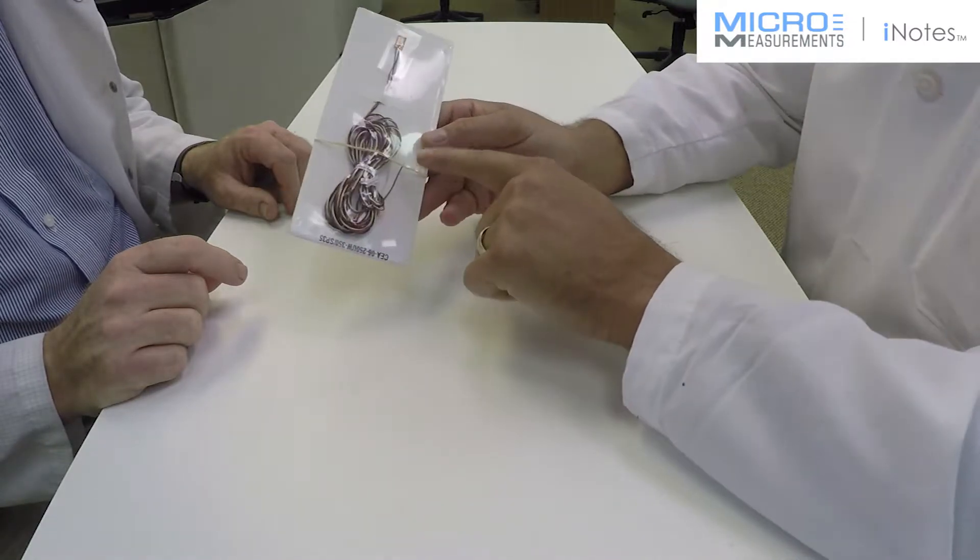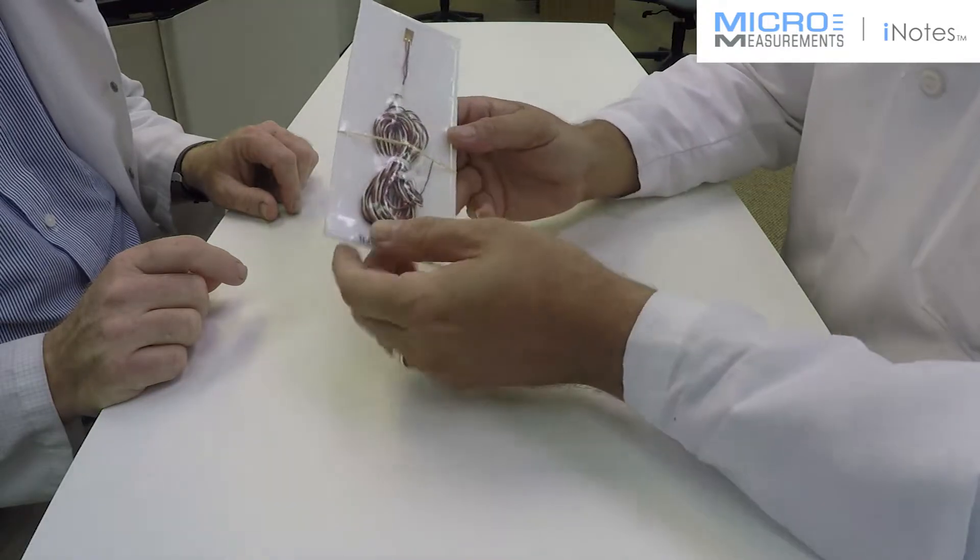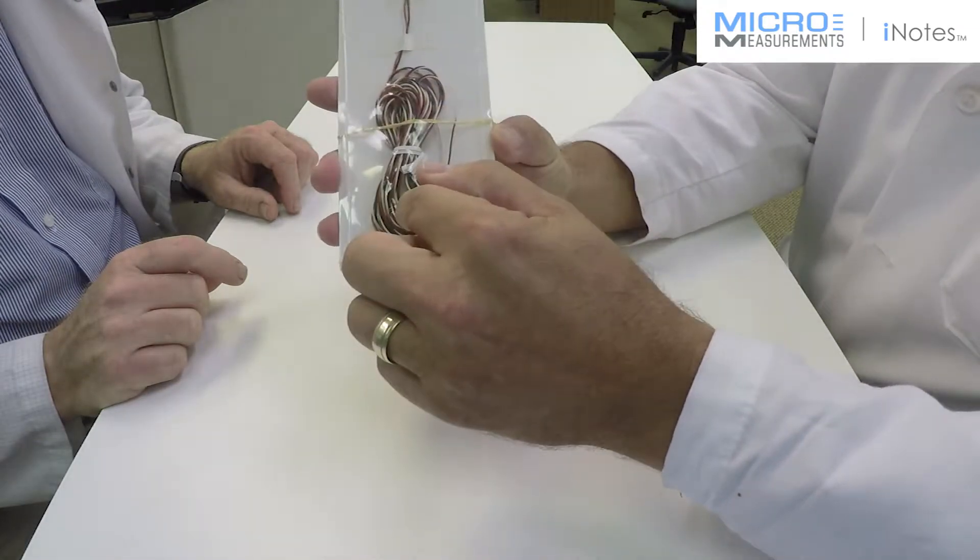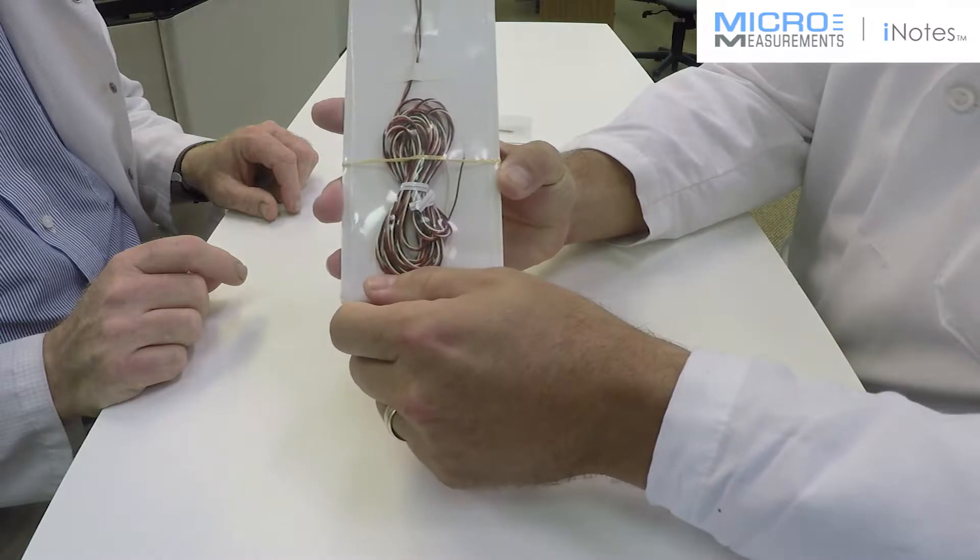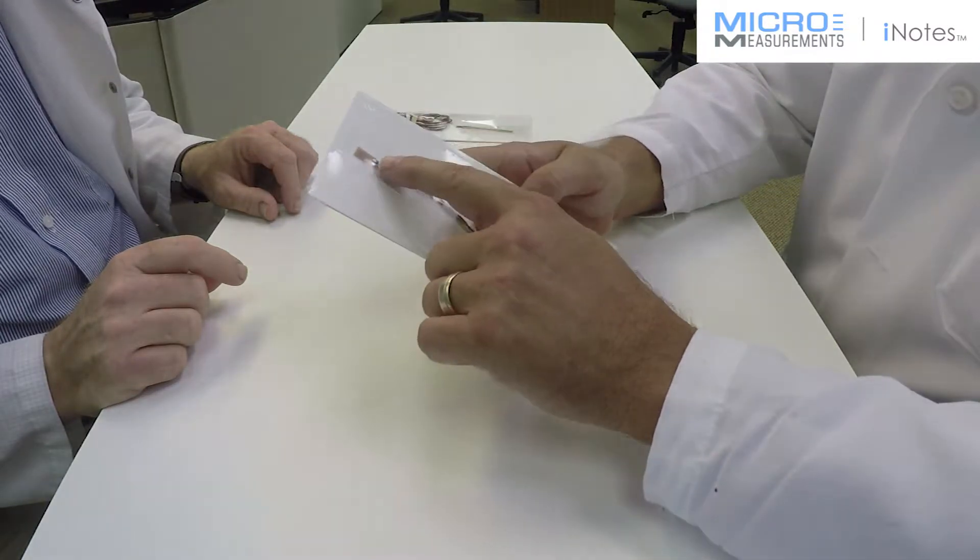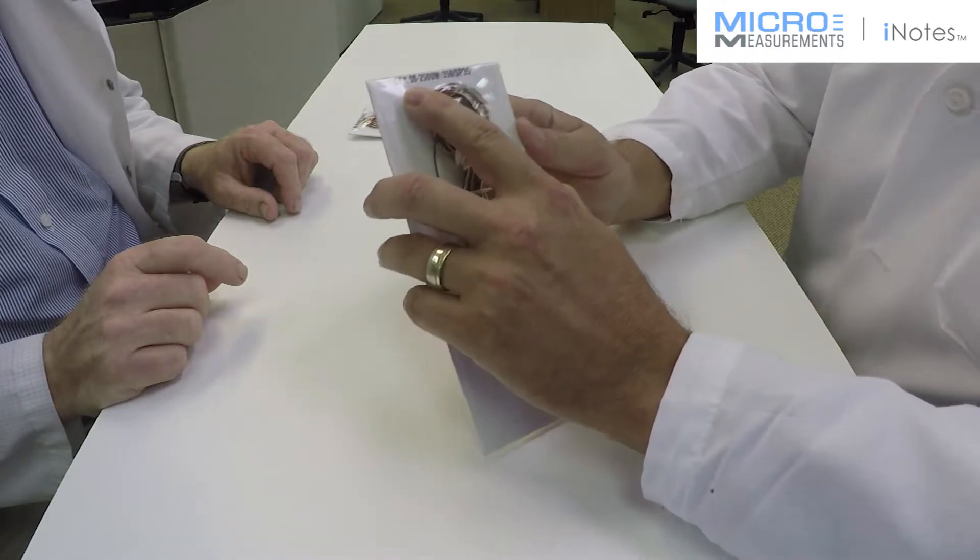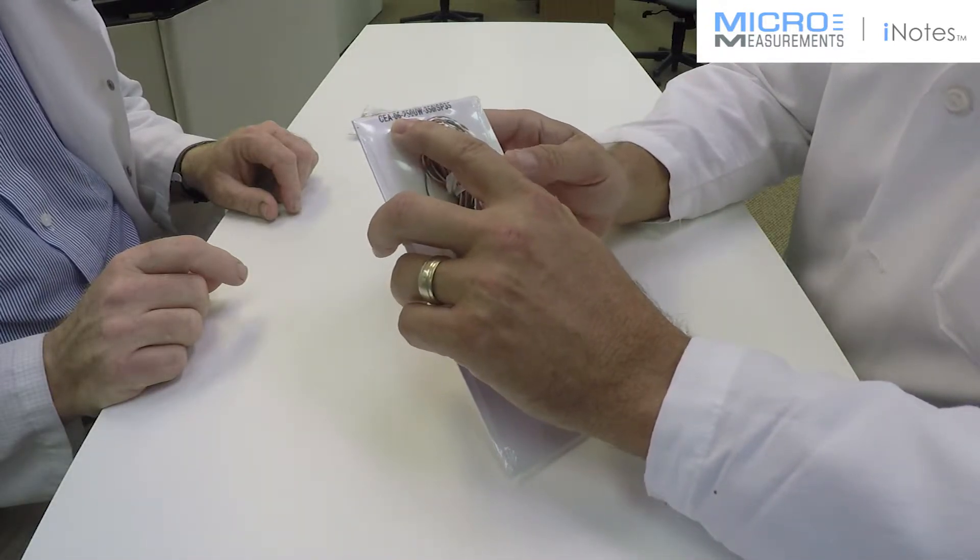We add on the 10 feet of cable and then we strip the ends. If you look closely, it's a twisted three-conductor red, white, and black Teflon insulated cable. This particular one happens to be on our CEA series gauges, which is one of our most popular types of strain gauges that we manufacture.